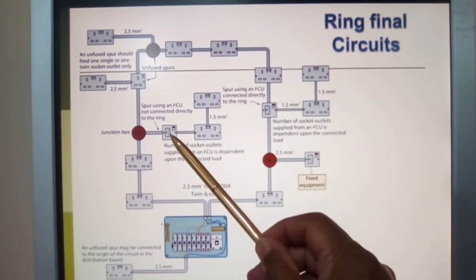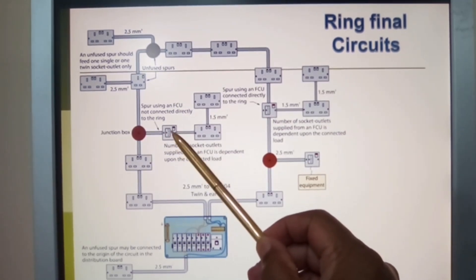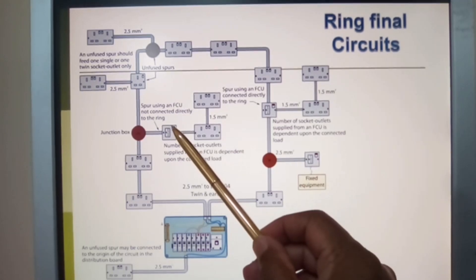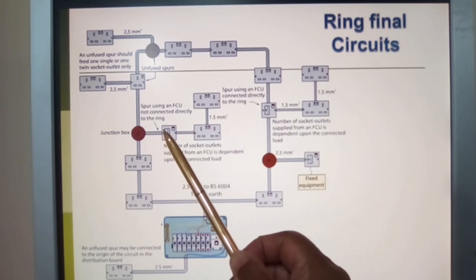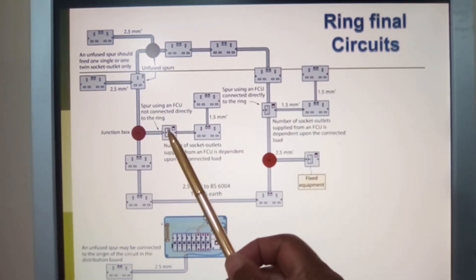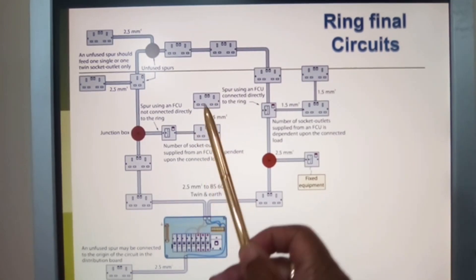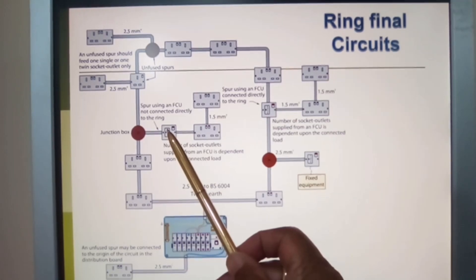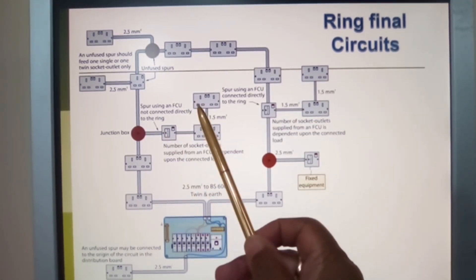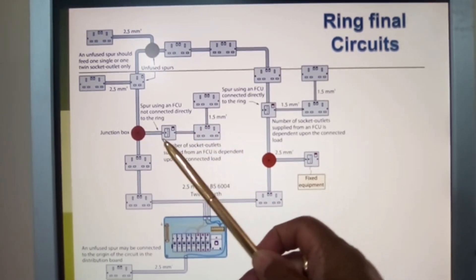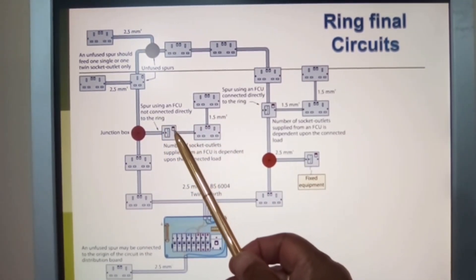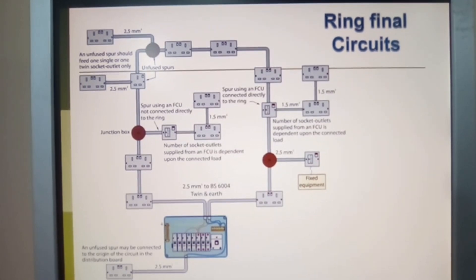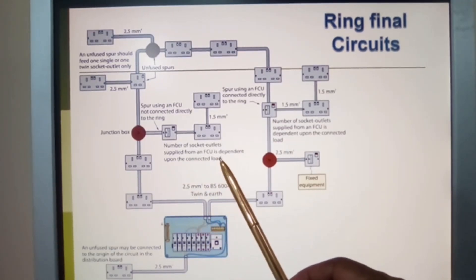They've put in a junction box here to feed a switched fused spur, protected by the fuse. You can only draw current from this socket rated by that fuse value, normally 13 amps. The number of sockets always supplied from an FCU is dependent upon the connected load.